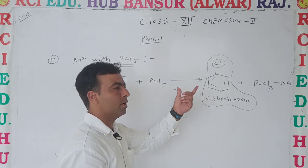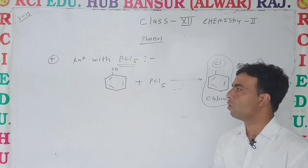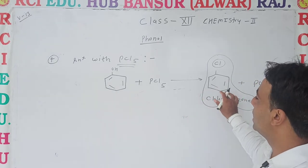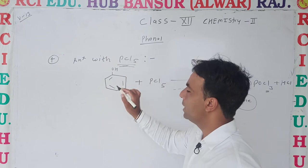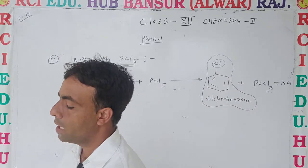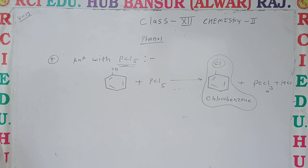So the process to convert phenol to chlorobenzene is to use phosphorus pentachloride (PCl5) as the reagent.